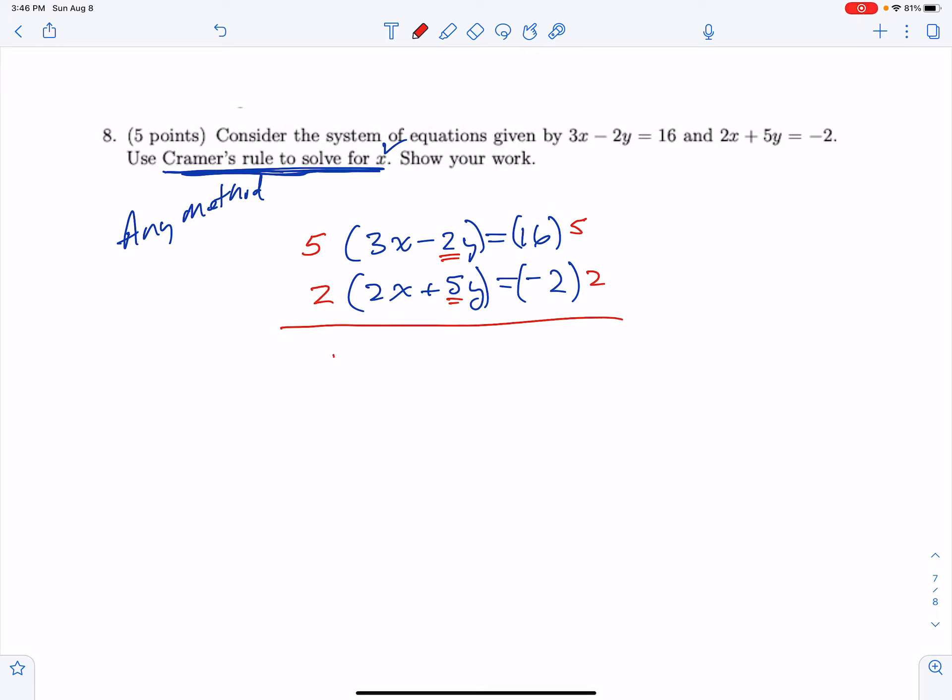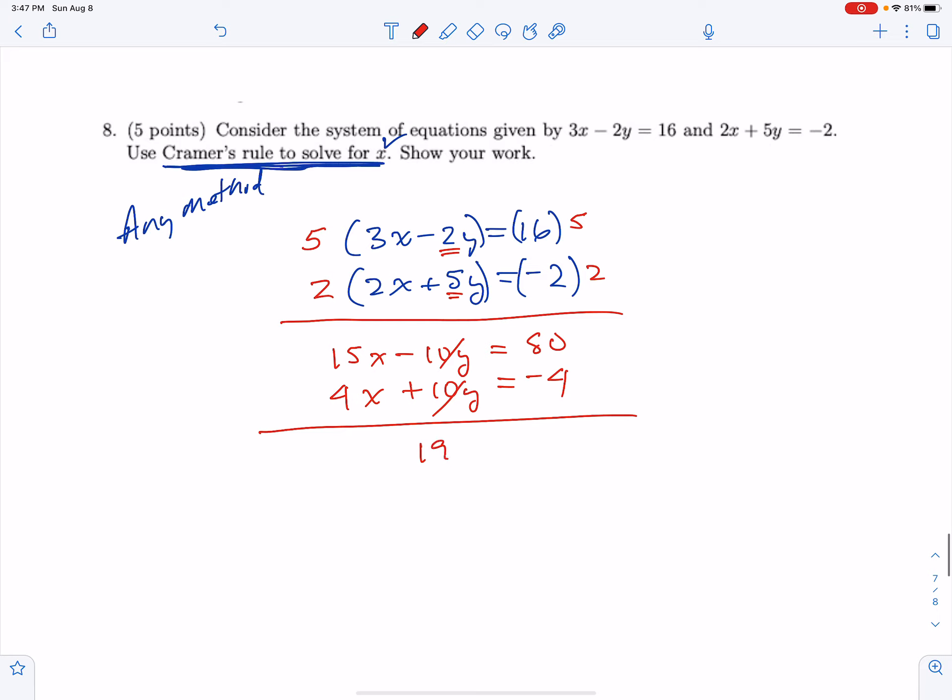When I multiply it out I get 15x - 10y = 80, and then 4x + 10y = -4. Then I add these together, and the 10y terms cancel. I get 19x = 76, so I can solve for x.